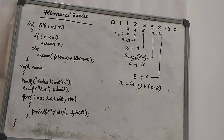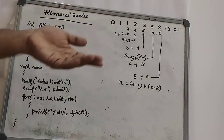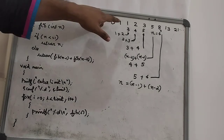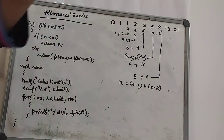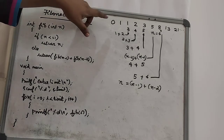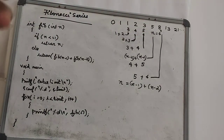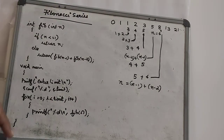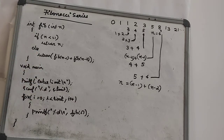Now let's see how many elements are printed. The first five Fibonacci series elements are: 0, 1, 1, 2, 3. For the first seven elements of the Fibonacci series, 0 through 13 are printed. All elements of the series are printed as the output.